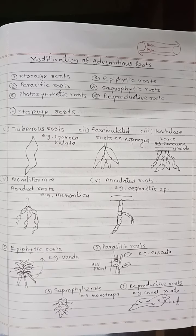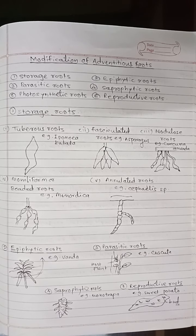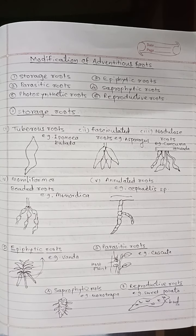Storage roots, epiphytic roots, parasitic roots, saprophytic roots, photosynthetic roots, and reproductive roots. These are the modifications of adventitious roots. The storage roots are again subdivided into tuberous roots, fasciculated roots, nodular roots, moniliform or beaded roots, and annulated roots.